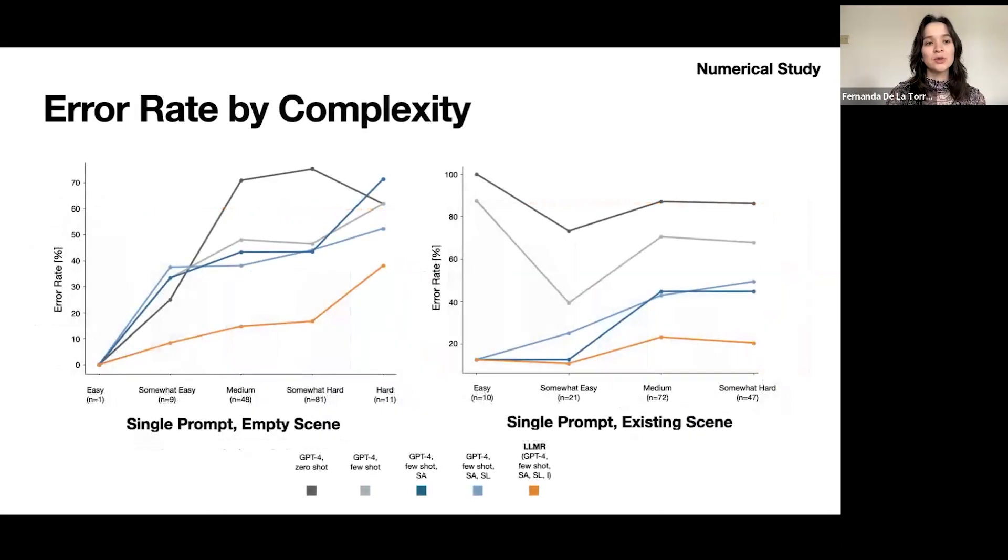As I mentioned, we also measured error rate by complexity. This consisted of taking all of our hundreds of prompts and dividing them into different difficulty levels, from easy, somewhat easy, medium, somewhat hard, and hard. As we would intuitively expect, all model types, so with different modules turned on and off, perform worse as the prompts get harder. But what we also find is that LLMR, with all of the modules activated, perform best in all cases. This is interesting because it tells us that LLMR is performing better consistently across different prompt levels, because it could have been the case that LLMR was only helping in situations where the prompts were easy or somewhat hard, but we see this consistent improvement across all levels of difficulty.